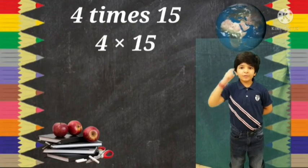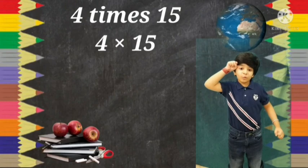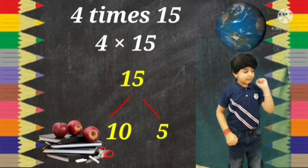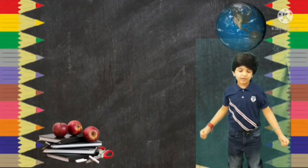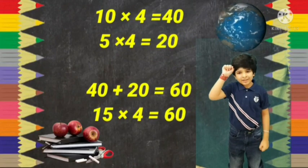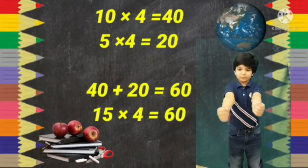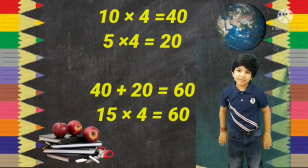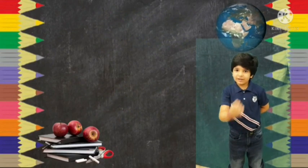For example, 4 times 15. We split 15 into 10 here and 5 here. 10 times 4 equals 40, and 5 times 4 equals 20. So 40 plus 20 equals 60. Now let's do another one.